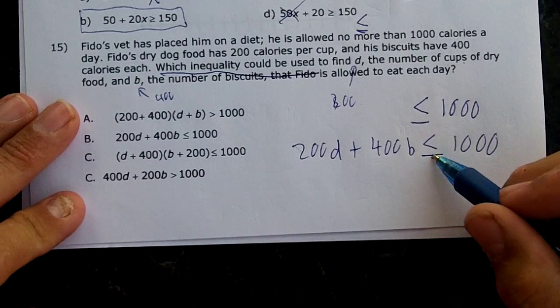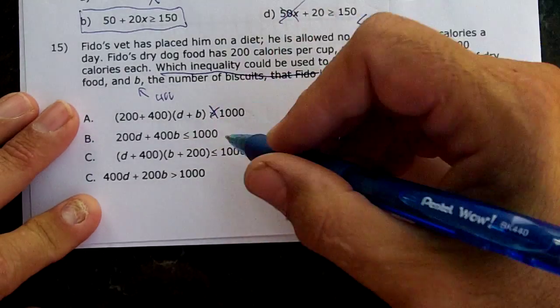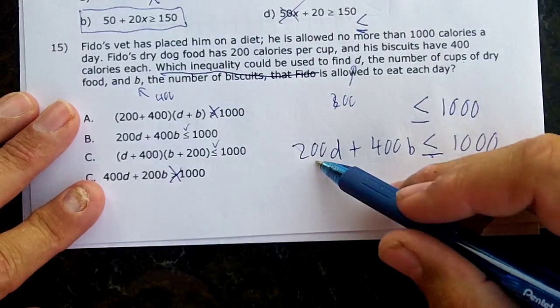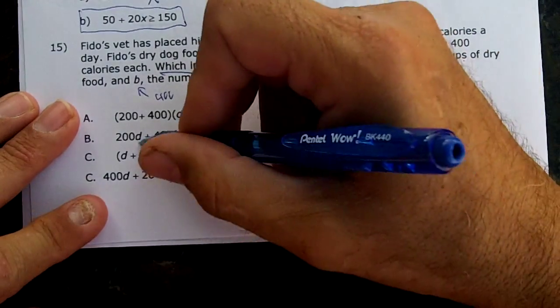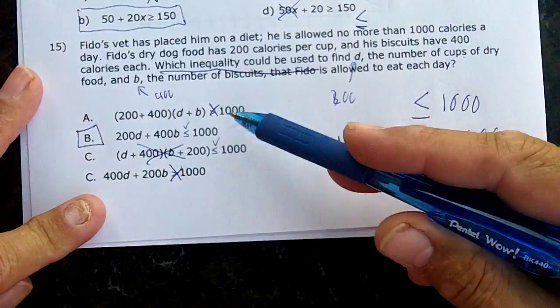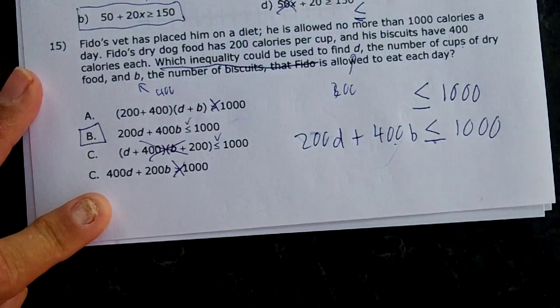First, eliminate everything that doesn't have less than or equal to a thousand. That one's wrong, that one checks, that one checks, that one's wrong. Now we need 200D plus 400B. This is incorrect, so the right answer choice would be B. See how I'm showing my work on this—make sure you show your work on your test to get credit.